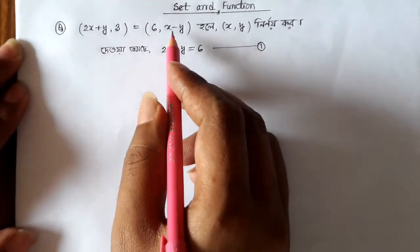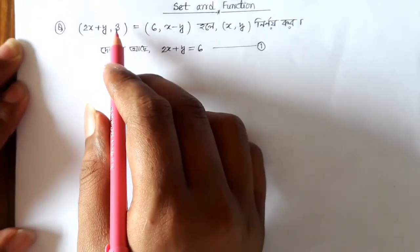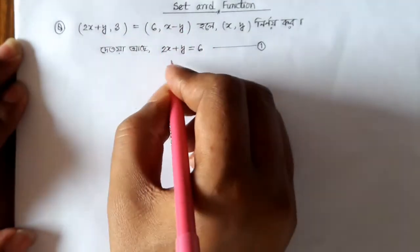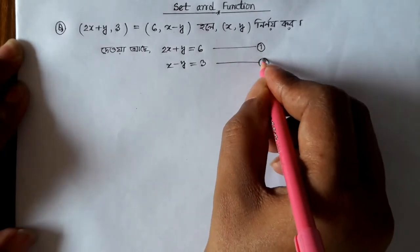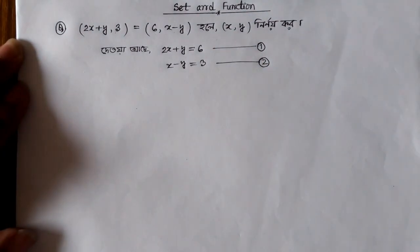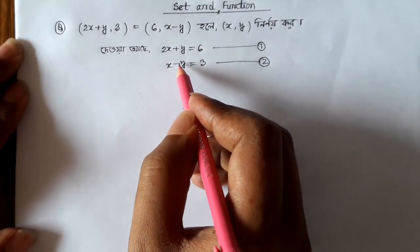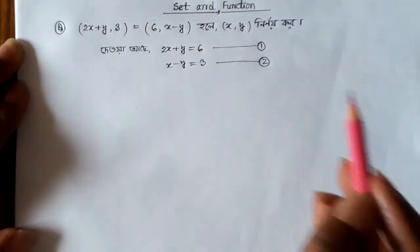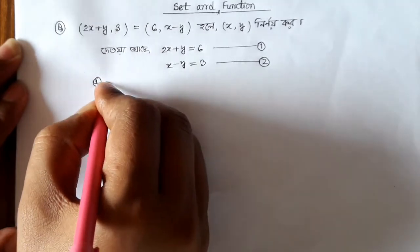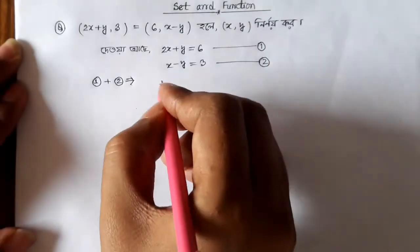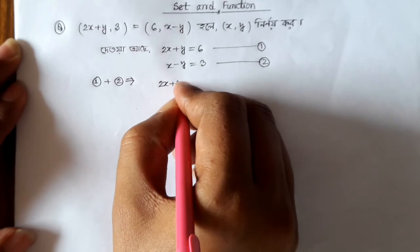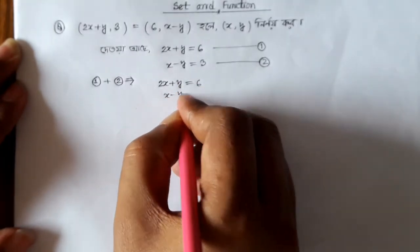So x minus y is equal to 3. We will break this down into two equations: 2x plus y equals 6, and x minus y equals 3. We will solve this system of equations.